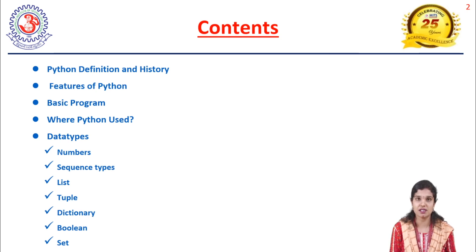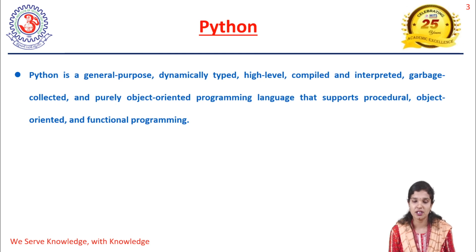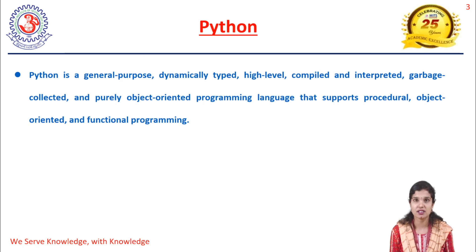The main data types are number types and sequence types: list, tuple, dictionary, boolean, and set. Coming to the Python definition, Python is a general purpose, dynamically typed, high-level, compiled and interpreted, garbage collected, and purely object-oriented programming language. Dynamically typed means the variable can be assigned at runtime — that is called a dynamically typed language.